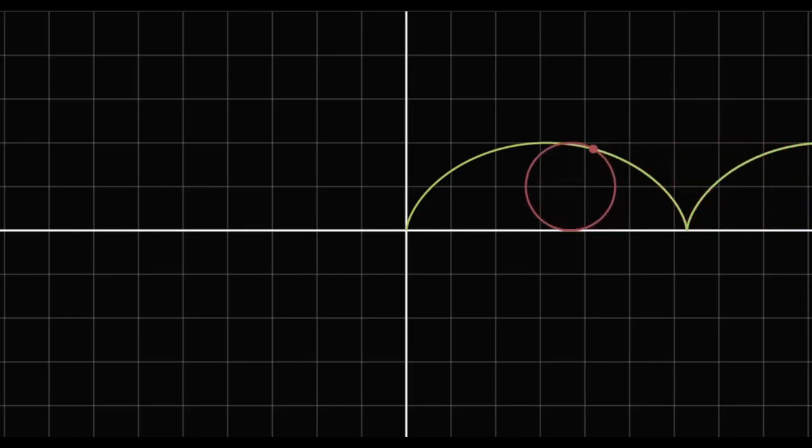However, the point doesn't necessarily have to be on the circle. The curves traced out by a circle rolling on a line are in general called trochoids. If the point is inside the circle, the trochoid is called curtate.